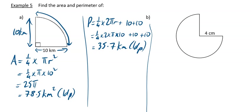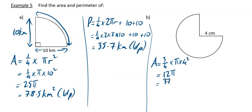The next one is a similar question. For the area, instead of being a quarter it is three quarters of a full circle. So it's three quarters times pi times 4 squared. If you do that on your calculator you will get 12π, which to one decimal place is 37.7 centimeters squared.